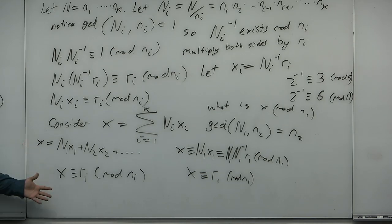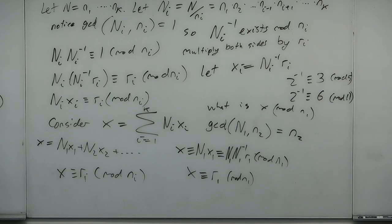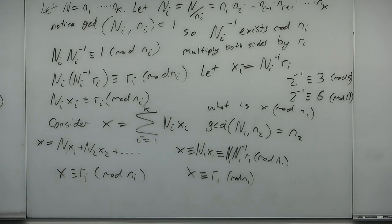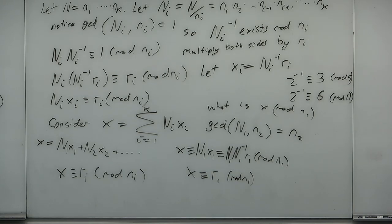We do this linear combination to construct such an X, so such an X must exist. This is a tricky proof. Convince yourself that X is a simultaneous solution to all of the congruences. If you take X as defined and mod it by Ni, you'll always get ri. Therefore X is a solution to the k linear congruences. Anyone lost or stuck on any details of the proof? We've proven such a solution exists.